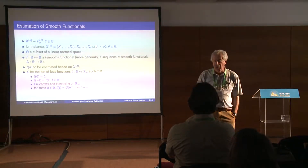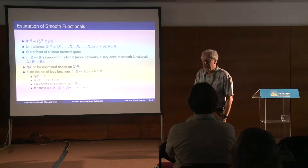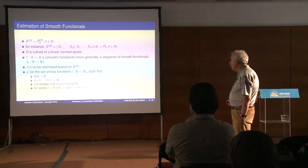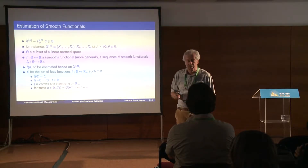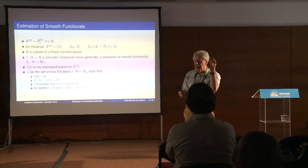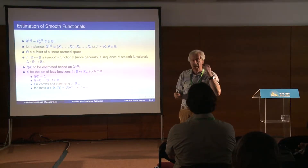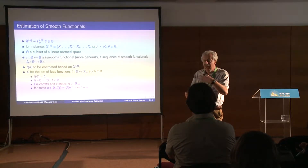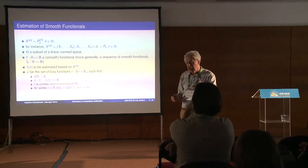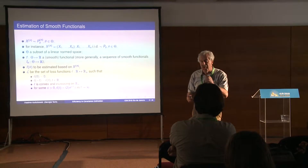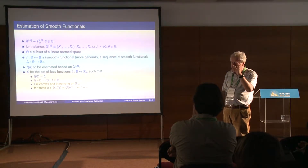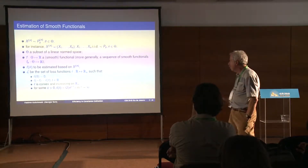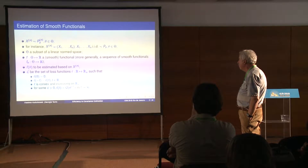As soon as dimensions start growing, you already start losing something — you are losing rates of convergence in estimation problems. I will be interested not so much in estimation of the parameter as a whole, but rather in identifying some low-dimensional features that can be estimated with fast rate — by fast I mean the classical square root of n rate in parametric statistics. These features will be represented by smooth functionals on the parameter space, and the goal will be to estimate the value of this functional at the unknown parameter.